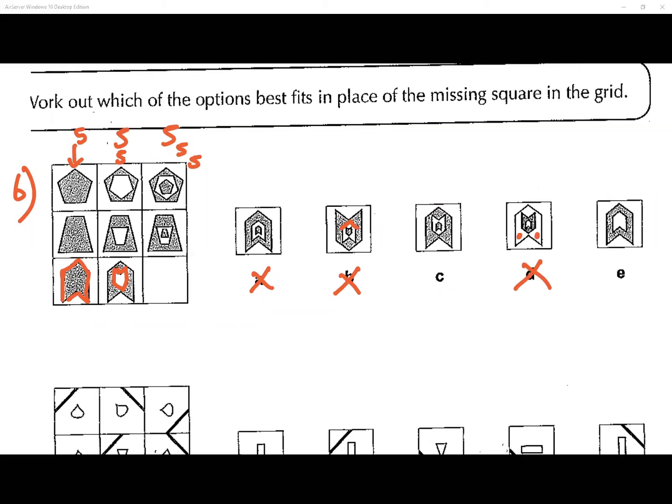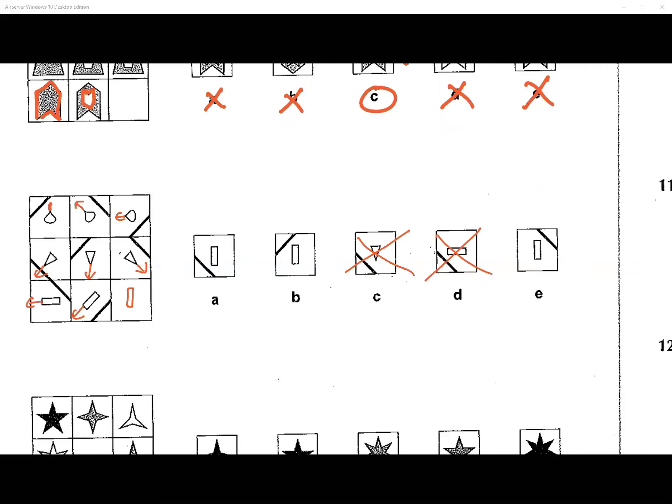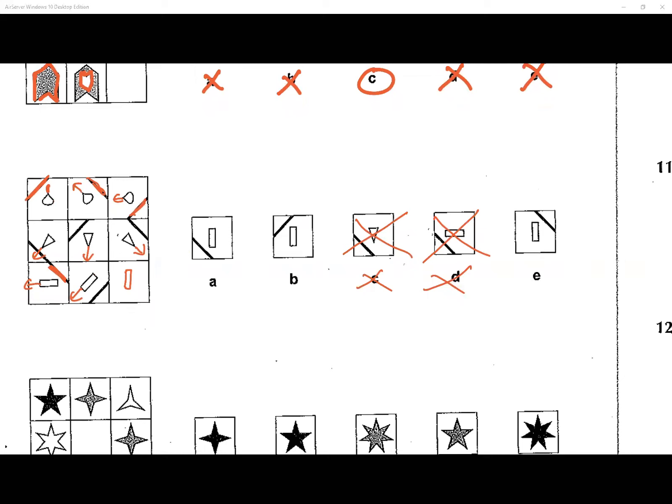Question number seven: the droplet shape rotates anti-clockwise — this way, this way, then we need it facing down. Options with a rectangle or triangle in the wrong direction are eliminated. The line inside also follows a pattern: it moves clockwise around the corners — top corner, then the corner below, then the opposite corner. So the answer must have the line in that position. The answer is A.